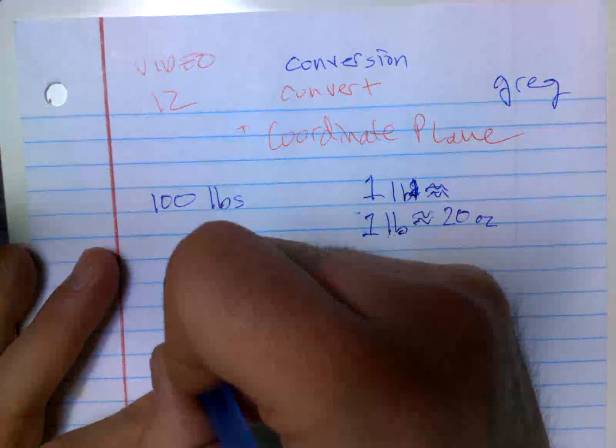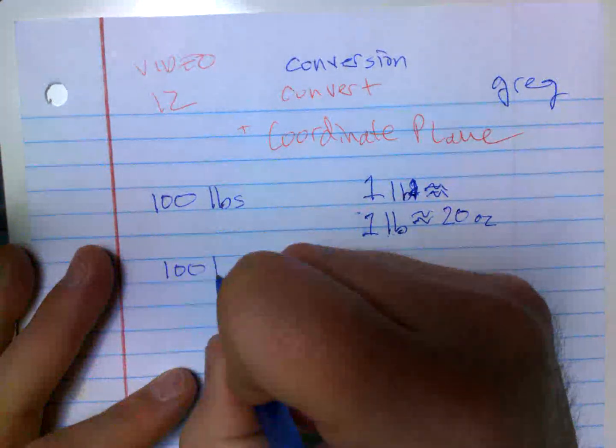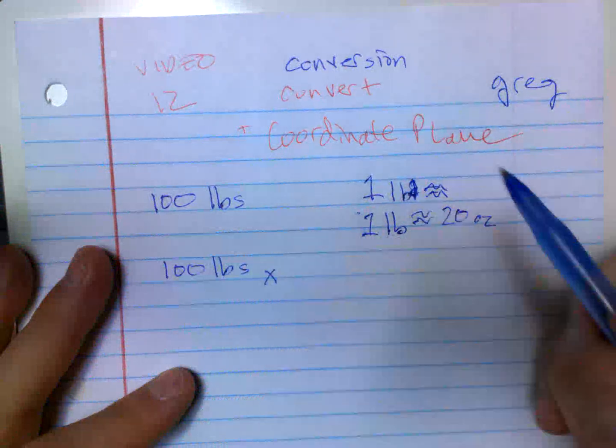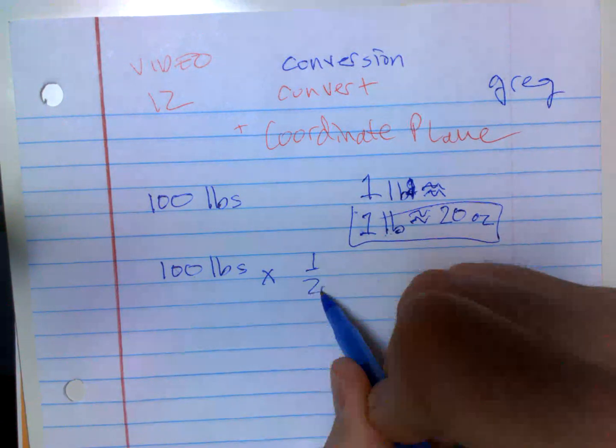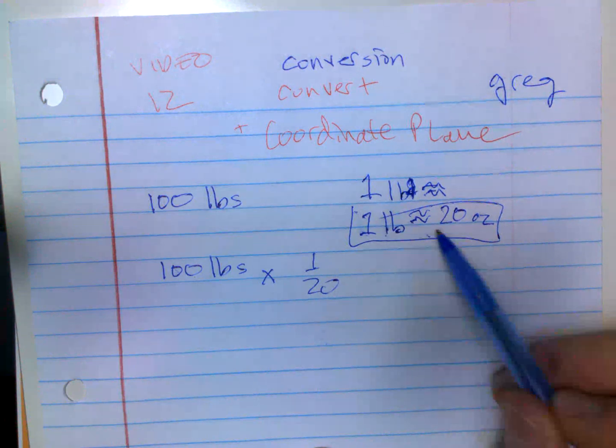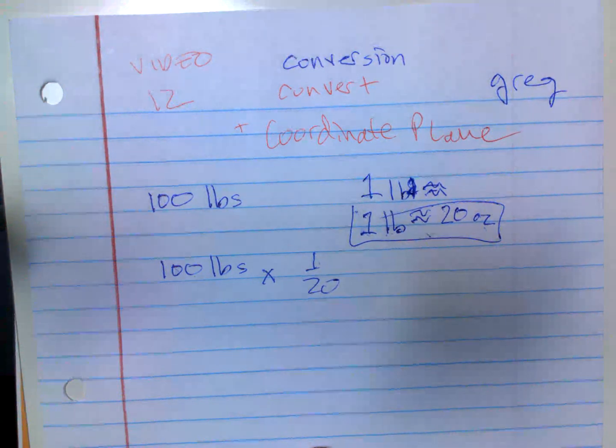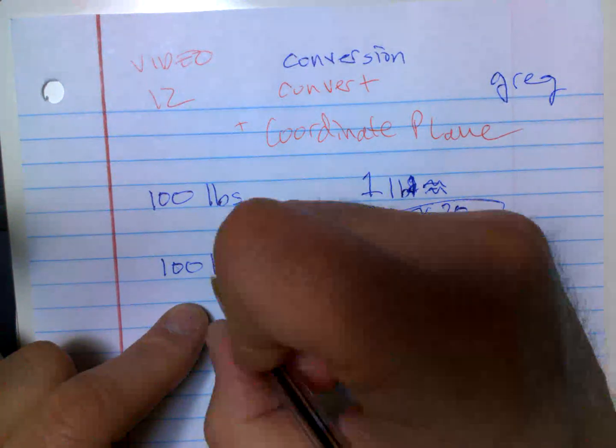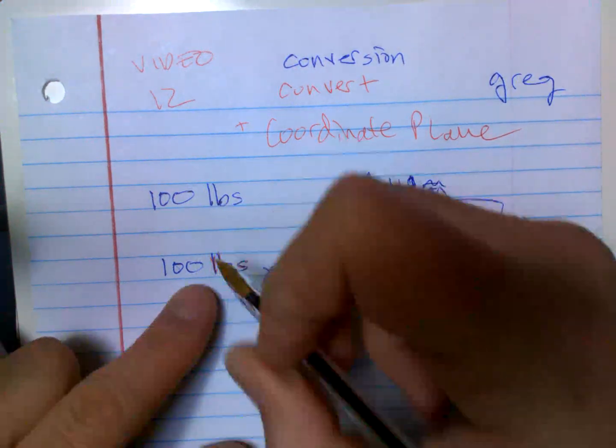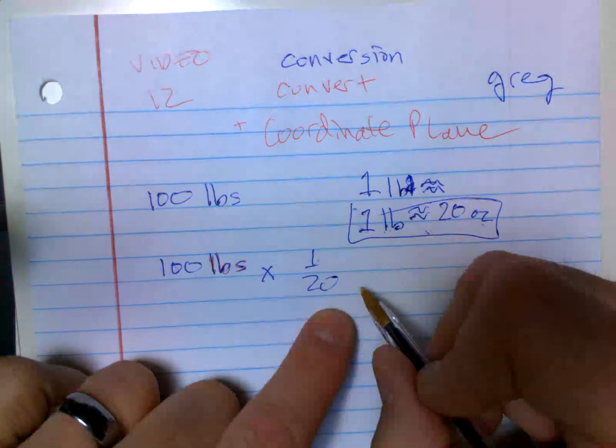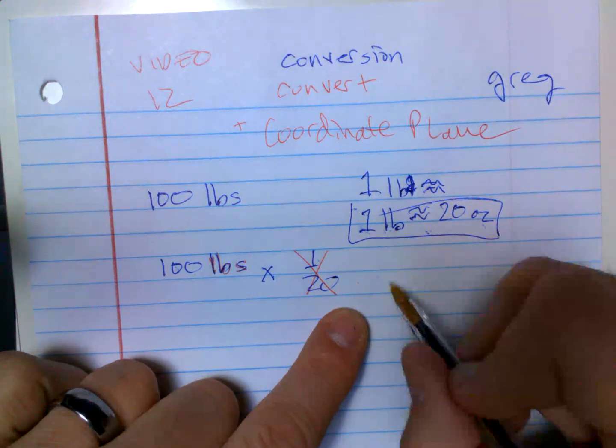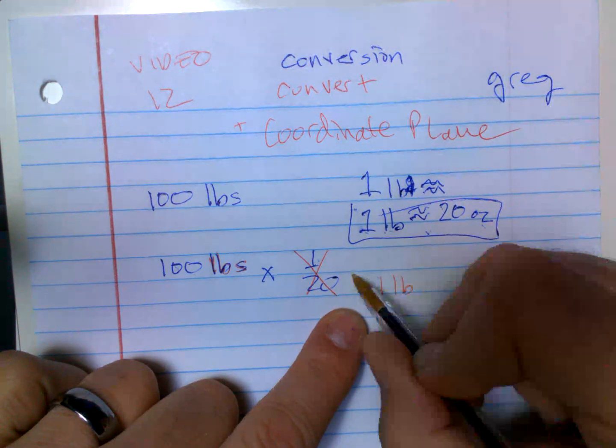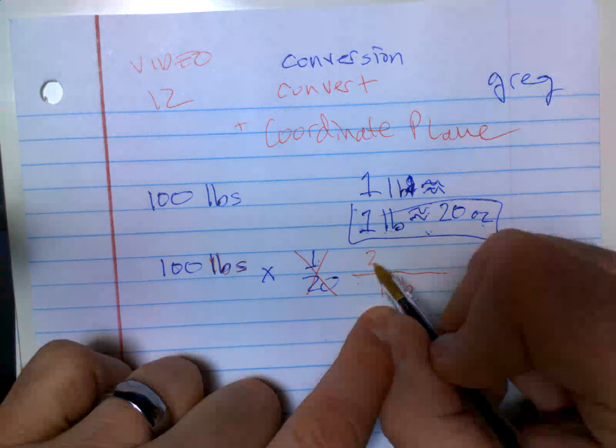Here's how you do conversion. The 100 pounds is what I want to change. I want to multiply it by this conversion rate. So am I going to put one over 20? No, you label them. I labeled this pounds, so because I want to get rid of pounds, pounds has to be on the bottom. The pounds is with the one, one pound has to be on the bottom, so then the 20 ounces is on the top.